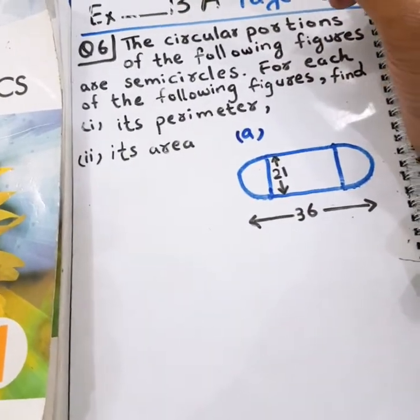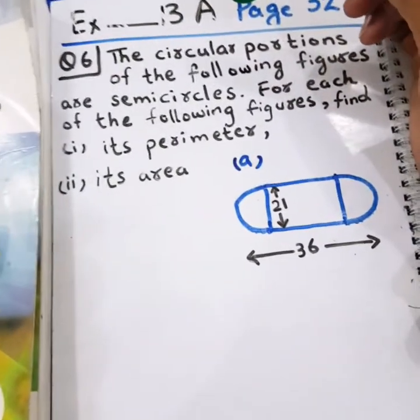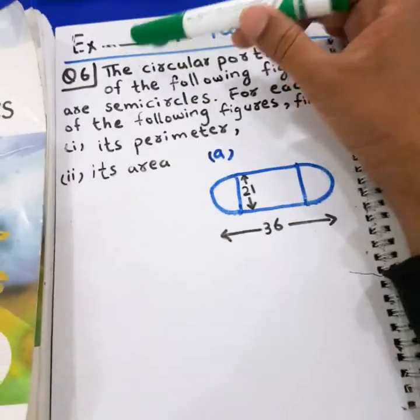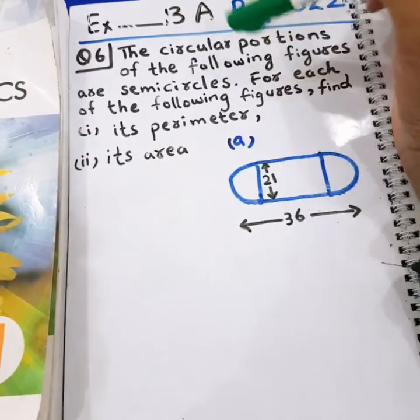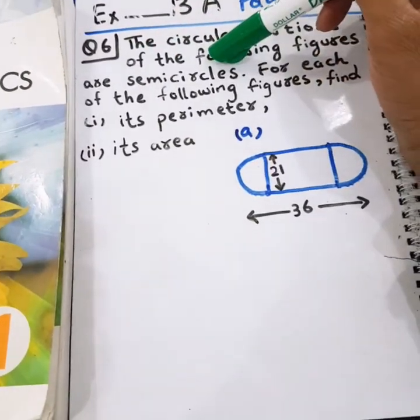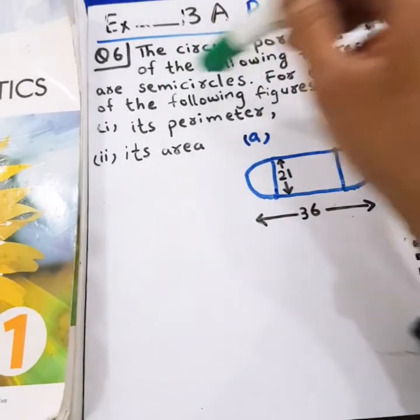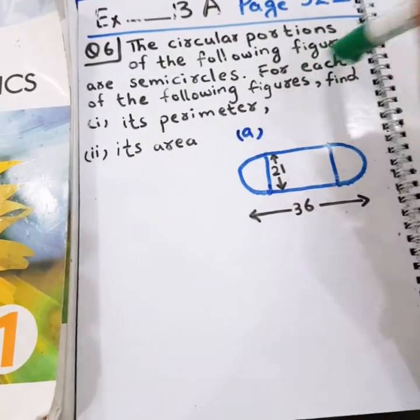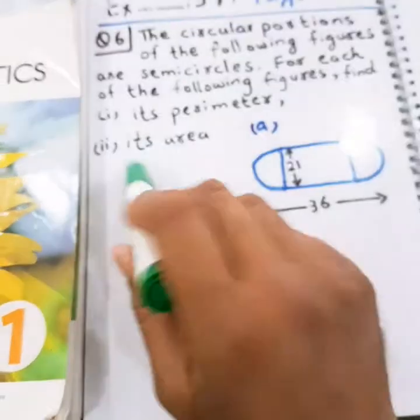With a peace of mind, read the question: 'The circular portions of the following figures are semicircles. For each of the following figures, find its perimeter and its area.'